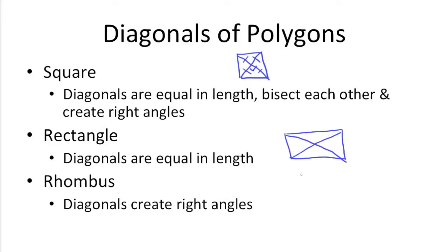And for rhombuses, diagonals create right angles in the middle.